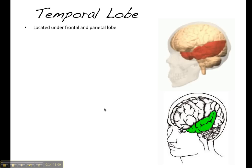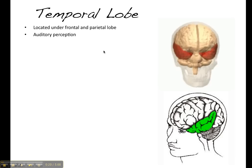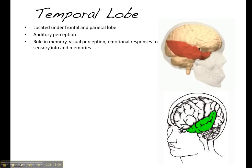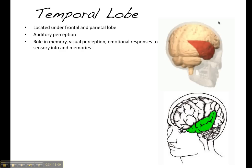The temporal lobe is very much involved in auditory perception, and this is where we find our auditory cortex located. It also plays a role in memory, visual perception, and emotional responses to sensory information and memories. Interestingly, the amygdala, which is located in the limbic system, is actually located very close to the temporal lobe.